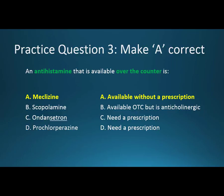Now we'll change the practice questions but keep the same answer choices so that each question makes a different answer correct. Question 3: An antihistamine that is available over-the-counter is? The correct answer is A, meclizine. Scopolamine is available over-the-counter but it is an anticholinergic agent. Ondanzetron and prochlorperazine both need prescriptions. Meclizine is an antihistamine and it's often used for motion sickness and generalized nausea.